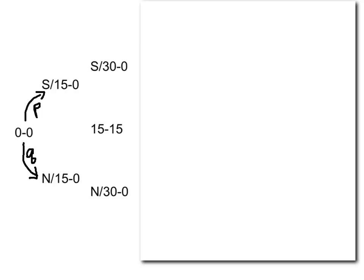After another point has been played, the score will be one of the scores shown here. If the server was up 15-0 after the first point, then winning another goes to 30-0, or losing goes to 15-all — fill in the probabilities of those two transitions. If the non-server was up 15-0, then the server winning goes to 15-all, and the non-server winning again goes to 30-0.